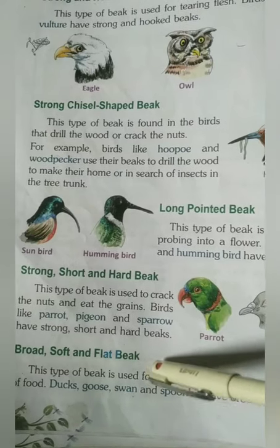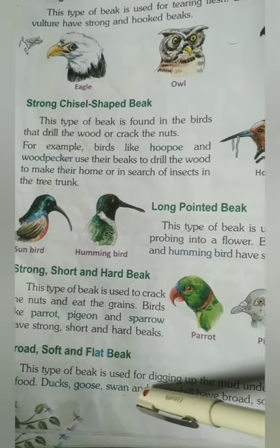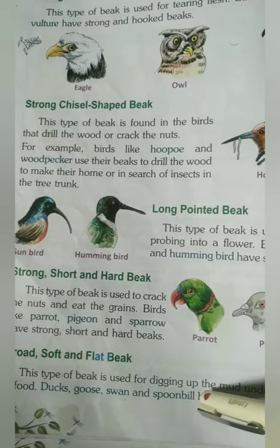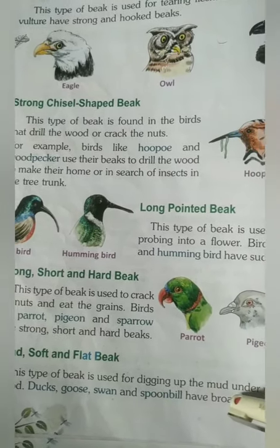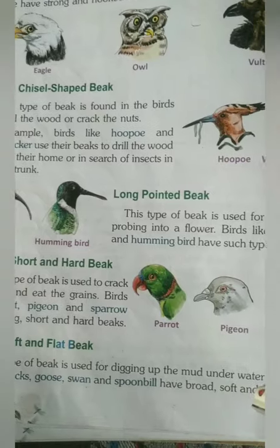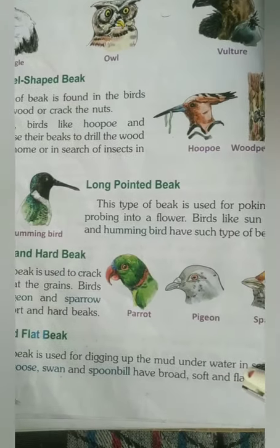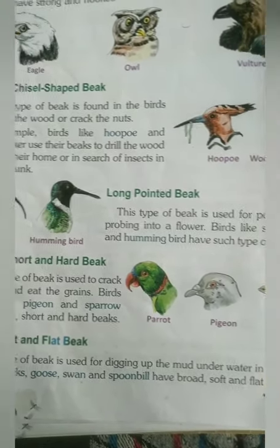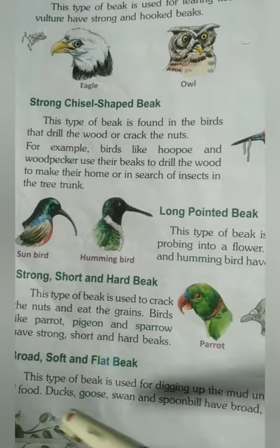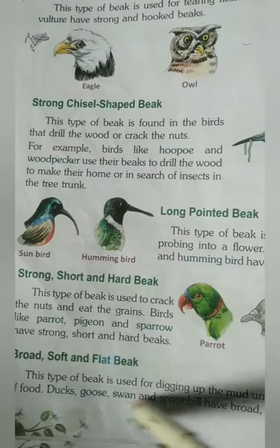The next one is the broad, soft, and flat beak. This type of beak is used for digging up mud underwater in search of food. For example, duck, goose, and swan.